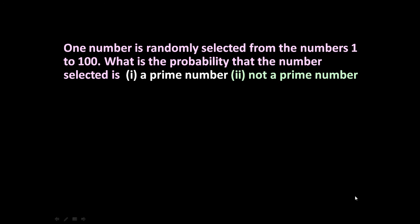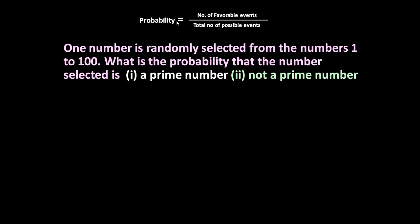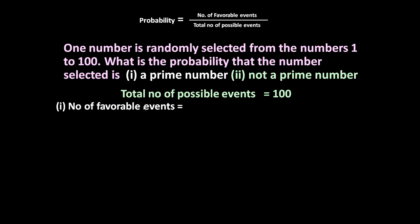Let us solve one more similar problem. One number is randomly selected from the numbers 1 to 100. What is the probability that the number selected is a prime number? That is Part 1. Part 2: it is not a prime number. The formula for probability is number of favorable events divided by total number of possible events. Total possible events = 100, since numbers 1 to 100 are there. For Part 1, number of favorable events = number of prime numbers from 1 to 100.